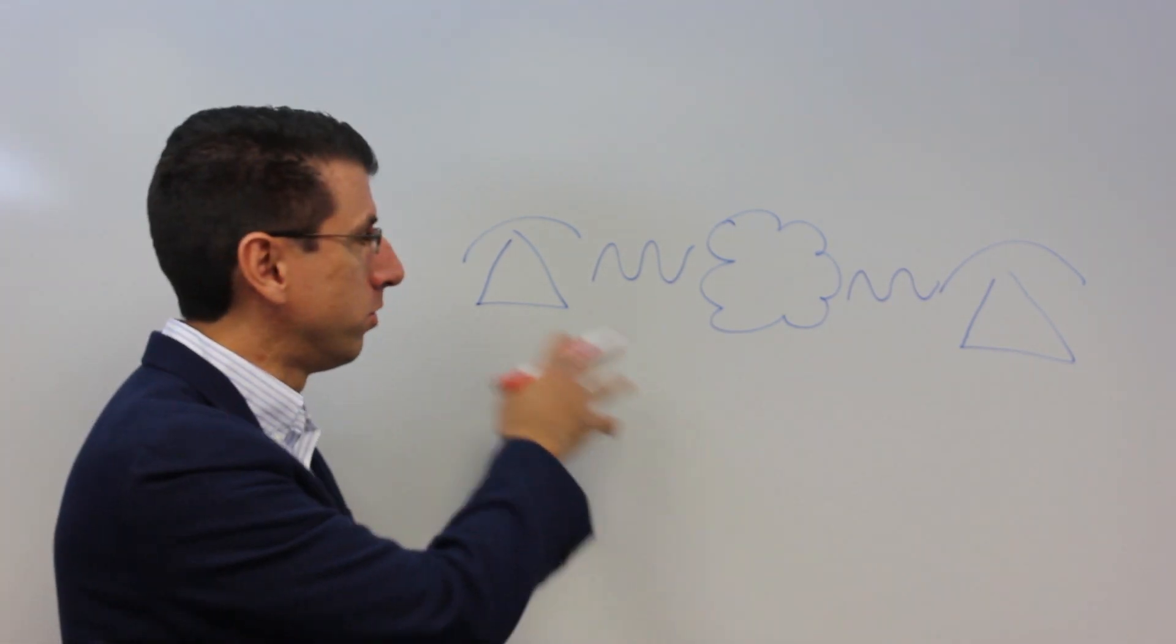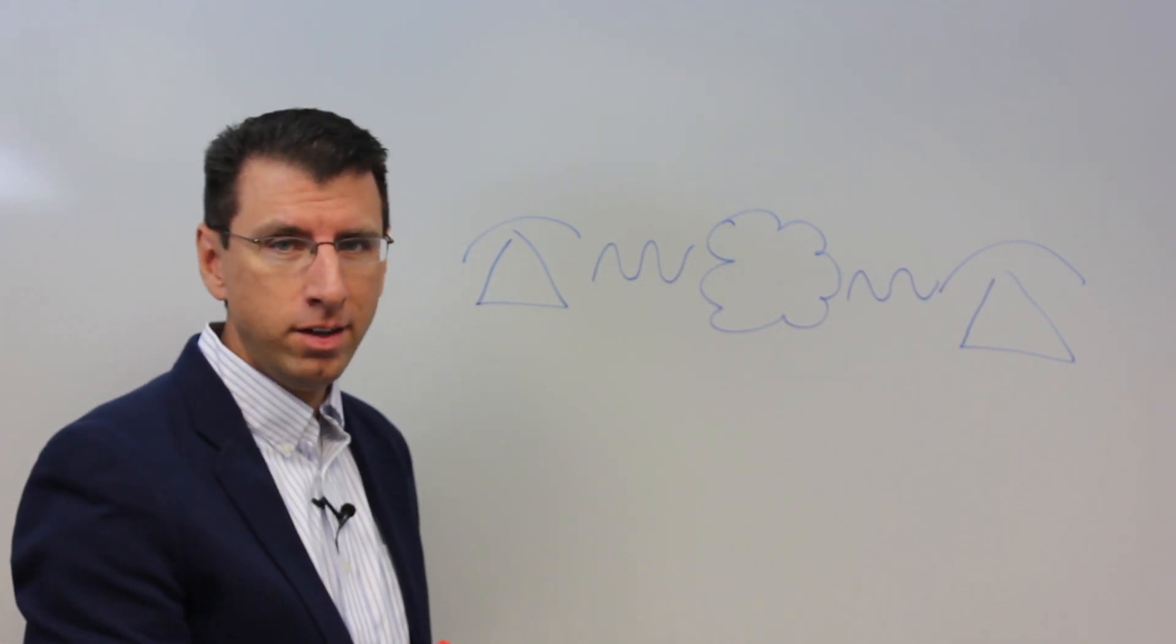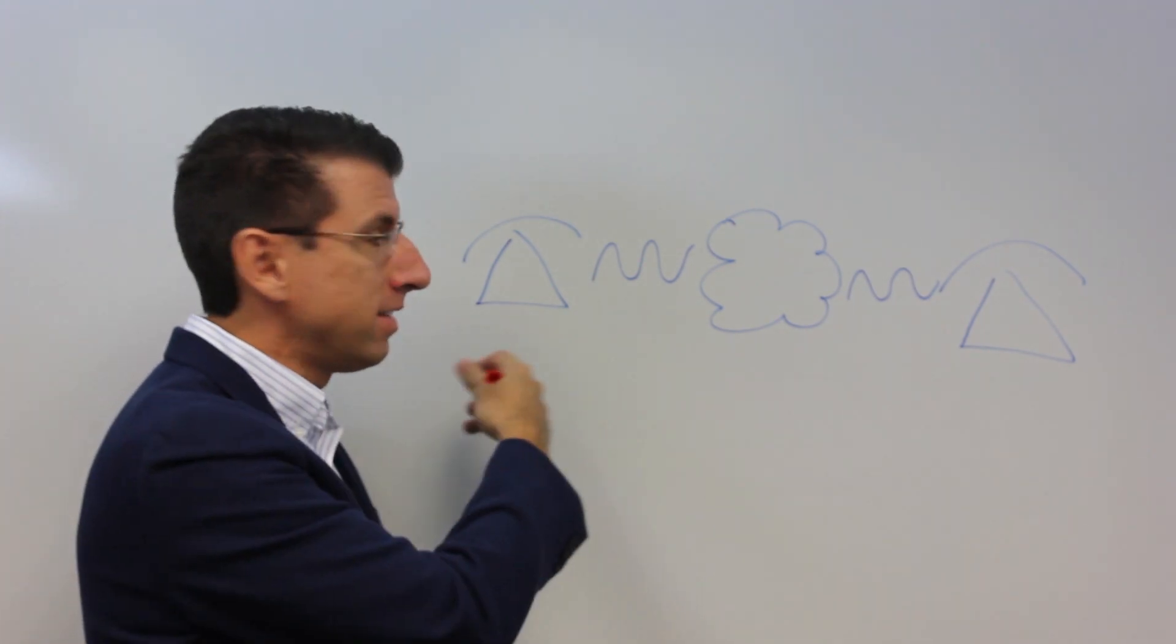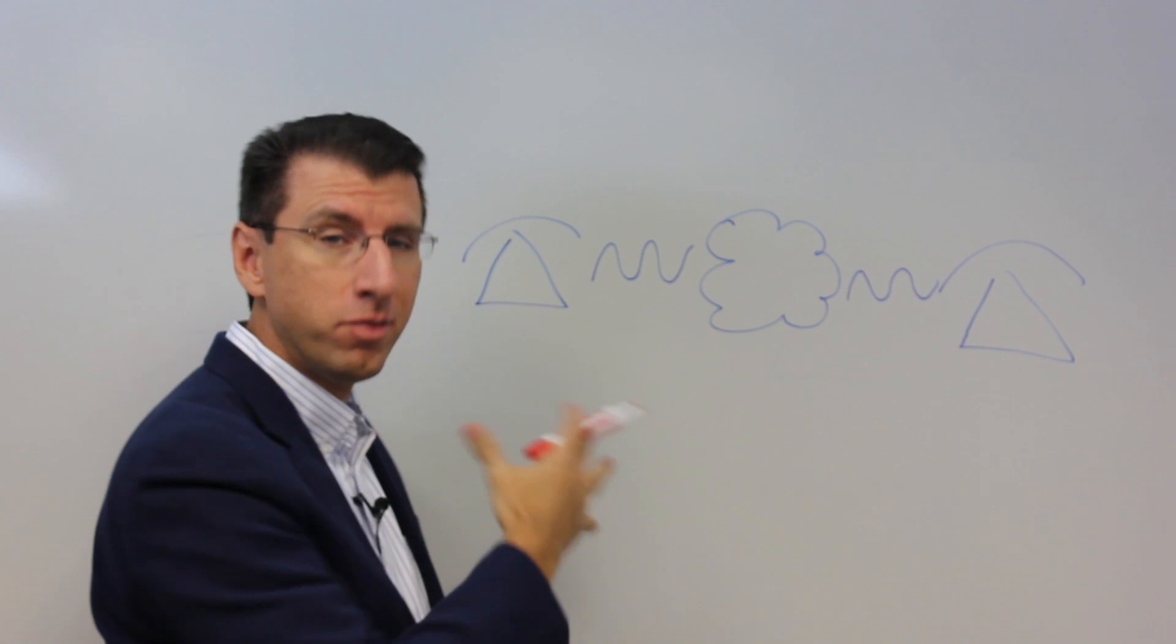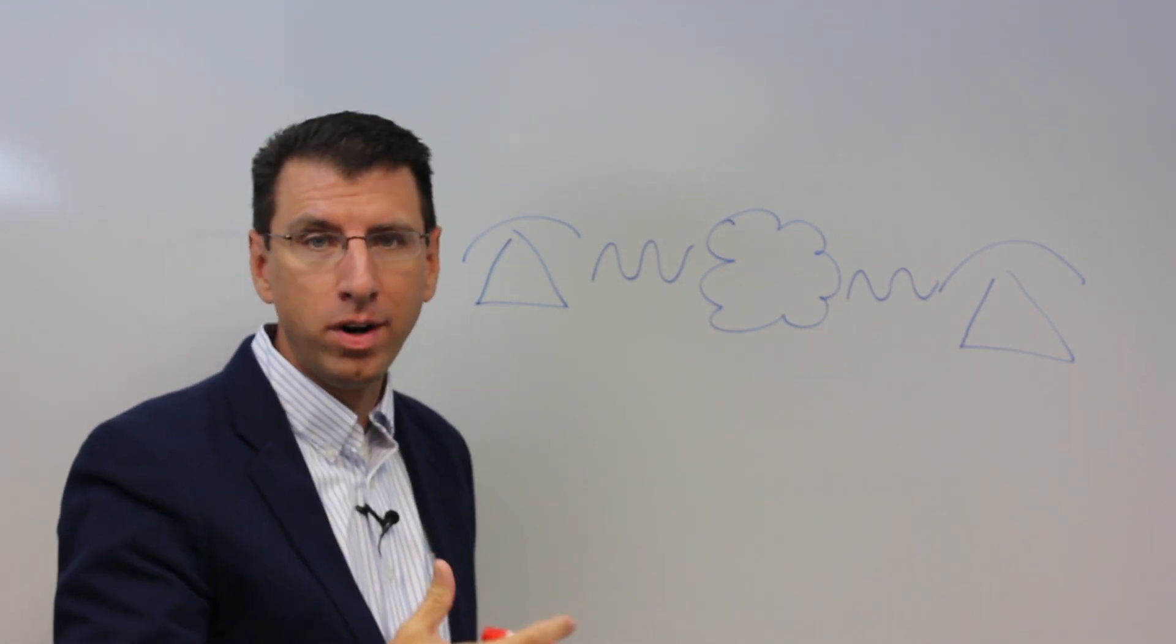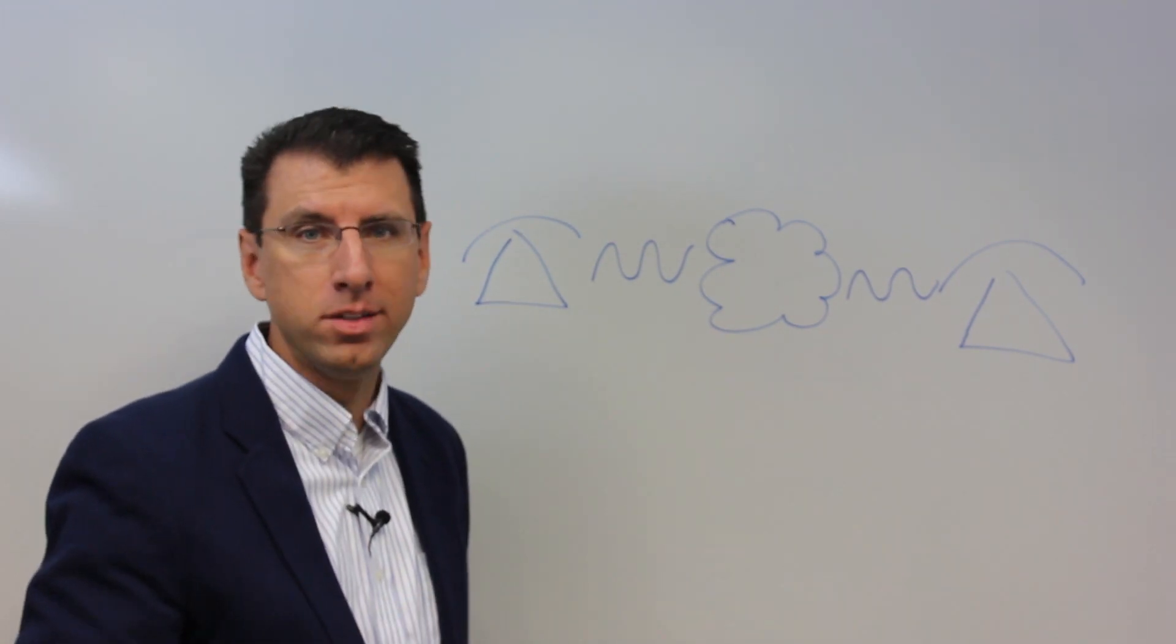So here we have a couple different phones. We've got a phone on the left and a phone on the right. What Voice over IP does is it takes an analog signal, that's this little sine wave that you see there, and converts it into digital and sends it over an IP network, a wide area network that's voice enabled.